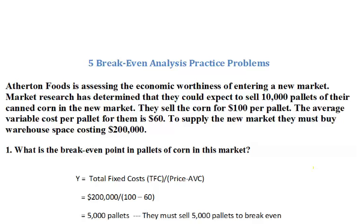Let's take a look at this make-believe situation of Atherton Foods. I've kept it very simple and tried to follow the same kind of symbols you see in the textbook. We're trying to figure out if we want to enter a new market with a new product. Market research says that we could sell 10,000 pallets of canned corn in this new market. Each pallet sells for $100, the average variable cost per pallet is $60, and to supply that market we must buy warehouse space — fixed costs of $200,000. The first thing I want to know is: what is the breakeven point in pallets?